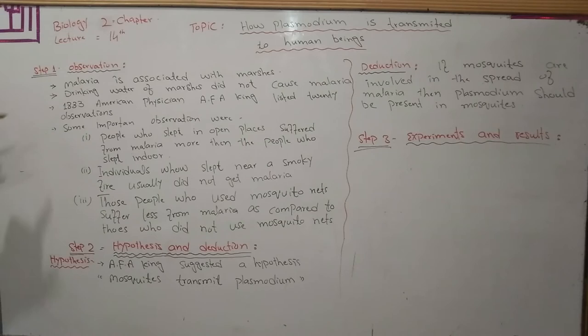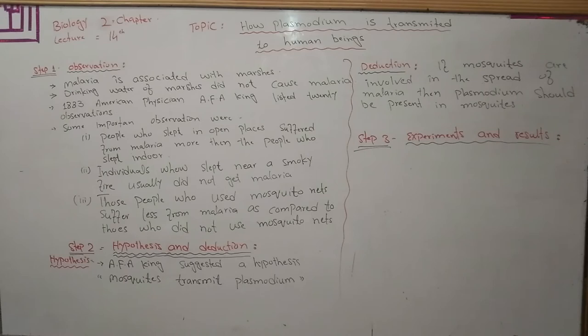The next observation: drinking water from marshy areas does not cause malaria. In 1883, an American physician, Afa King, listed 20 observations. Three of the most important observations are as follows. First one is: people who sleep in open places suffer from malaria more than people who sleep indoors.